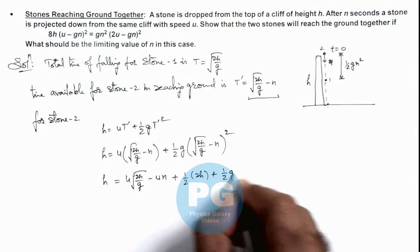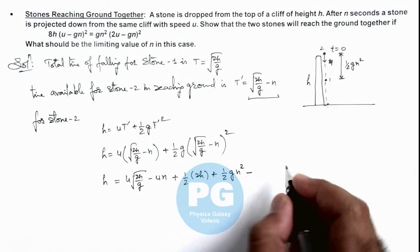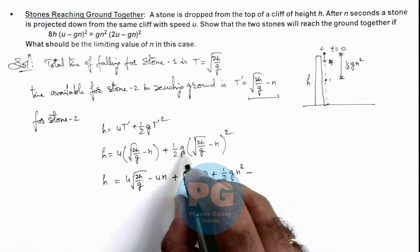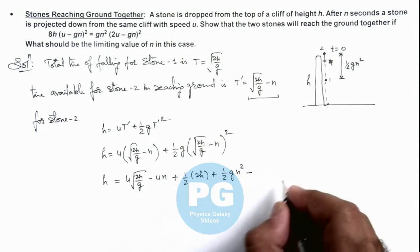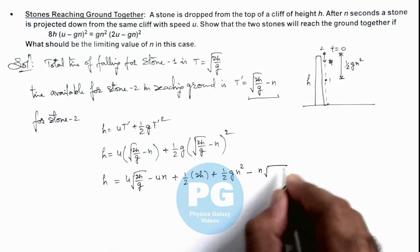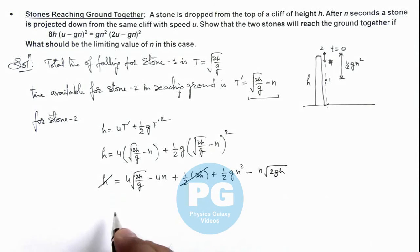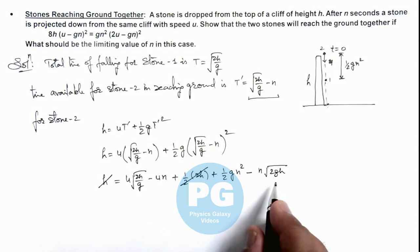This 2 gets cancelled out. This n multiplied by g multiplied by root 2h by g, so it is n multiplied by root 2gh. Here this h gets cancelled out, and on further simplifying and squaring this expression.